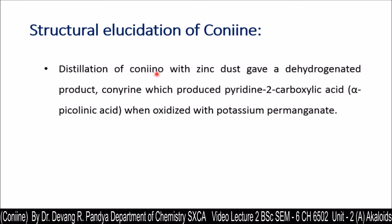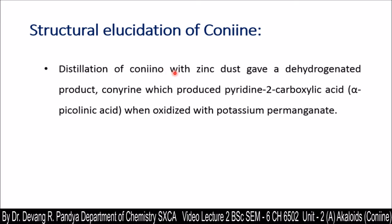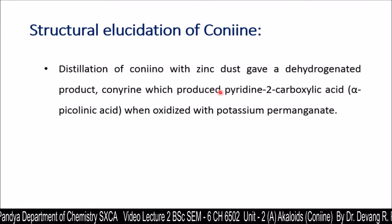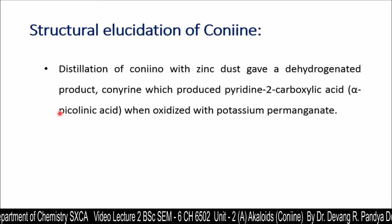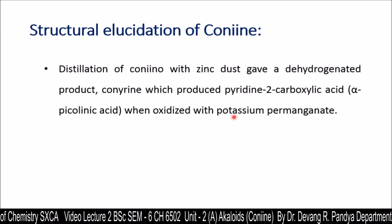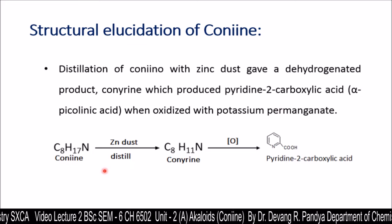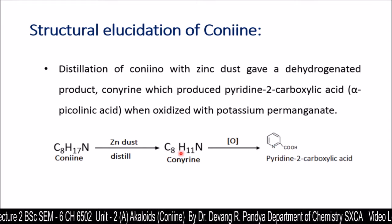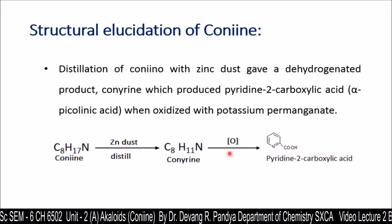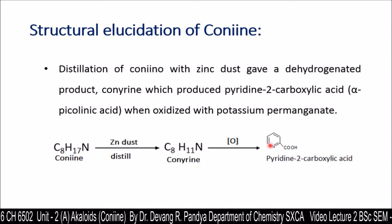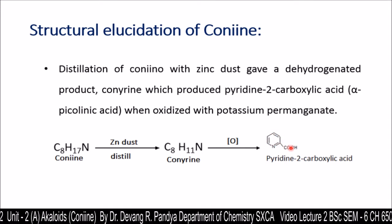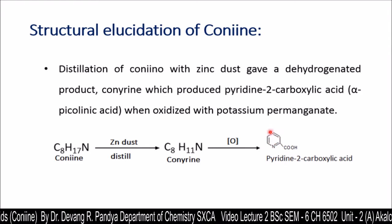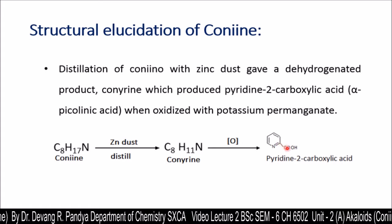The distillation of conine with zinc dust gave a dehydrogenated product that is coniine. This coniine produced pyridine-2-carboxylic acid, also known as alpha-picolinic acid, when oxidized with potassium permanganate. Here is the reaction: conine (C8H17N) on zinc distillation is converted into coniine (C8H11N), and on oxidation with potassium permanganate gives pyridine-2-carboxylic acid. This is the pyridine nucleus with a carboxylic acid at carbon 2, indicating that this compound has a pyridine nucleus with a branch at the second carbon.